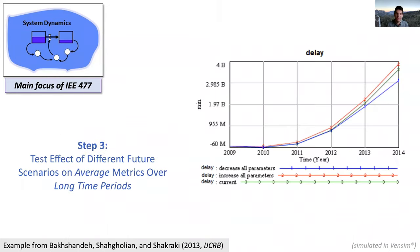In the airport system dynamics example, you have parameters for the airport and you're interested in average delay over a long period of time. Three different parameter cases — decreased, baseline, and increased — show that average delay decreases most with decreased parameters. But again, this plots the average delay, not the maximum delay or other variations. That's what system dynamics models capture — trends over time. That's not the main focus of this course.